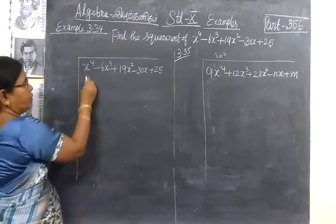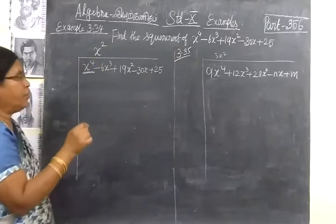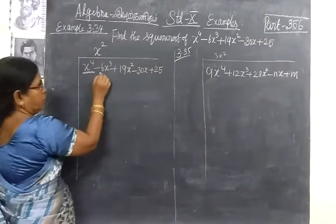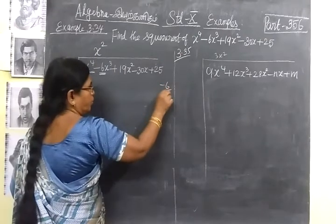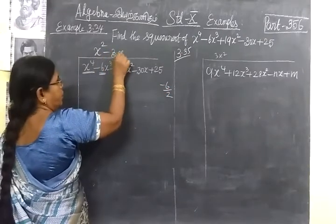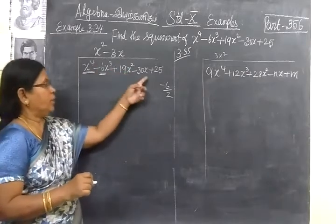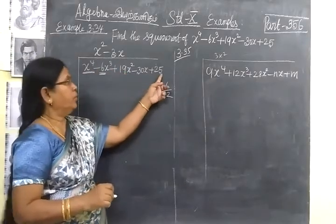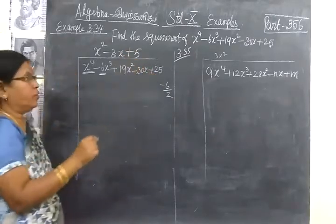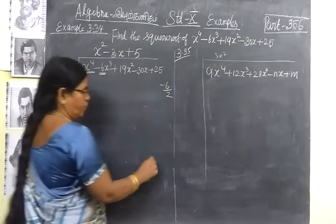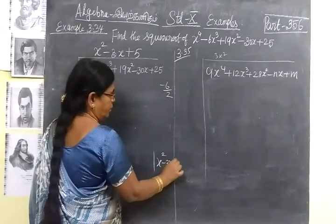Usually we know the method. In this case, we are writing x square. In the number minus 6, you divide by 2 — that means you are getting minus 3x. Then the last number 25: the square root of 25 is 5. With the plus 3, the number is plus 5. So easily we can write the answer for the modulus of x square minus 3x plus 5.